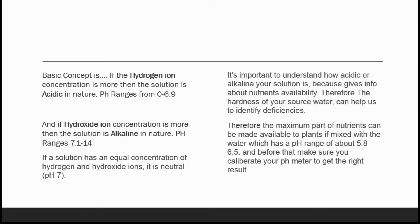If the solution has equal concentration of hydrogen and hydroxide ions, it is neutral, that is pH 7. It's important to understand how acidic or alkaline your solution is because it gives information about nutrients availability for the plants.